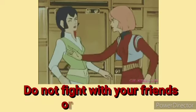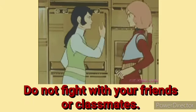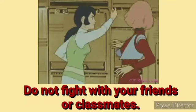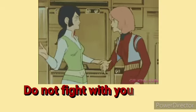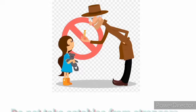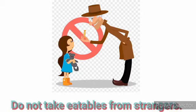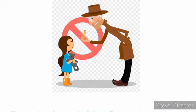Number six: Do not fight with your friends or classmates. We should never fight with anyone — not our friends and not our classmates. Number seven: Do not take eatables from strangers. If a stranger offers us food, we should refuse and not take it.